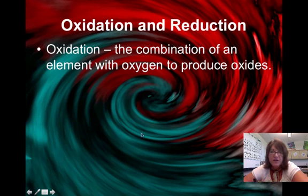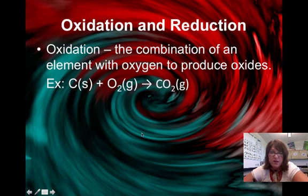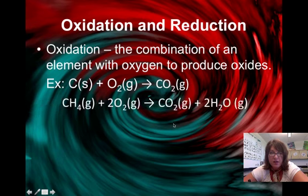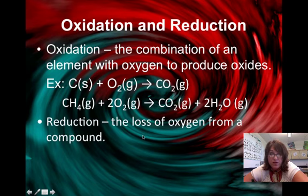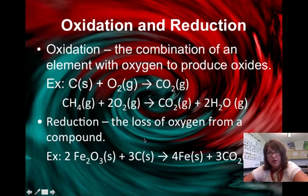Oxidation initially meant the combination of an element with oxygen to produce oxides. Carbon plus oxygen to make carbon dioxide, or here's an example with methane to make carbon dioxide and water. So combustion is an oxidative process. Also, you could have reduction where you lose the oxygen from the compound. We take the oxygen away from the ferric oxide here. So that was the initial definition of oxidation and reduction.